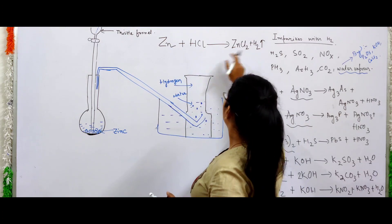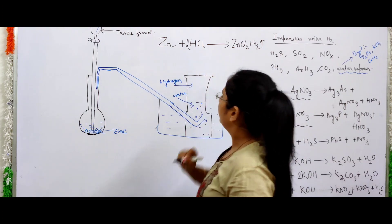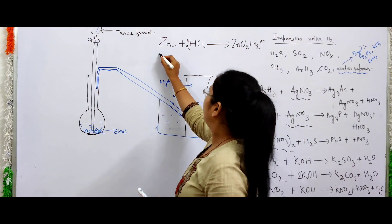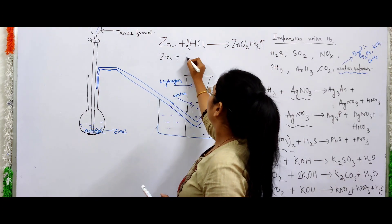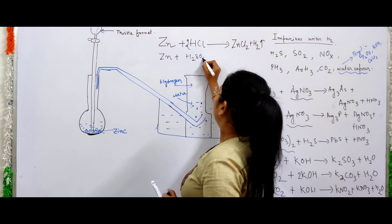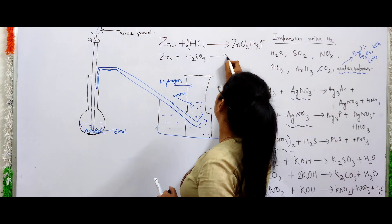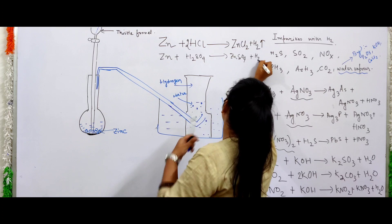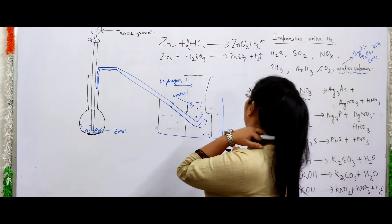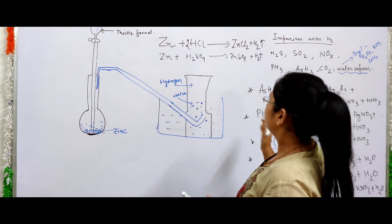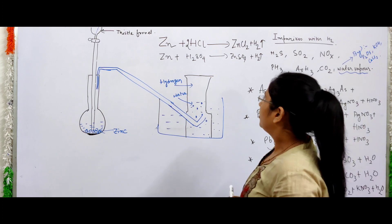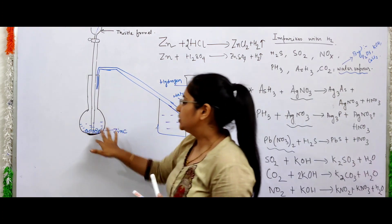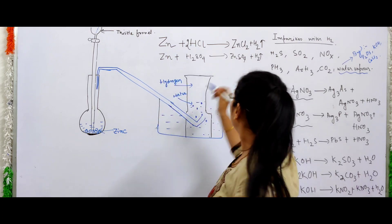ZnCl2 — balance check — yes that's correct. If you use H2SO4 instead, then ZnSO4 and hydrogen gas are produced. We balance the equations accordingly. So the theory is: metal plus acid gives salt and hydrogen gas.